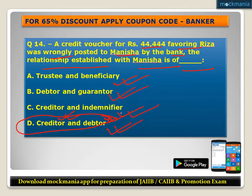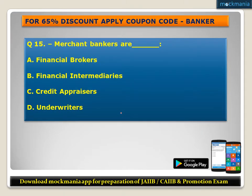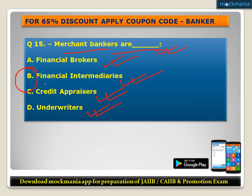Question number fifteen: Merchant bankers are financiers brokers, financiers intermediaries, credit appraisers, or underwriters? The correct answer is financial intermediaries. Merchant bankers work as financial intermediaries. These were the 15 important MCQs of subject PPV for the JIB exam.